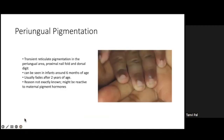Periungual pigmentation is a transient reticular pigmentation in the periungular area. The proximal nail fold and the dorsal digit can be seen in infants around six months of age, and it usually fades after two years of age. The exact reason is not fully known, but it may be due to reactivity to maternal pigment hormones. If there is no other pigmentation on the body, we can just reassure the parents that it will fade away.